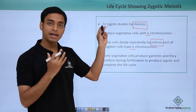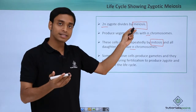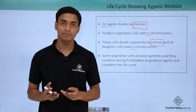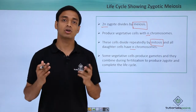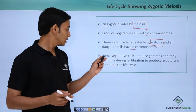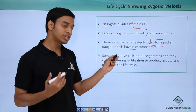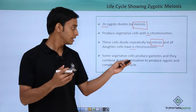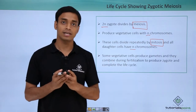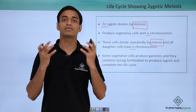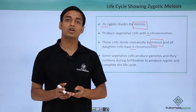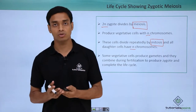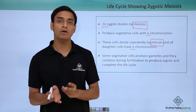The parent cell was 2N. It divided through meiosis and produced N number of chromosomes. Now these N chromosome-containing protists are dividing mitotically, which maintains the chromosome number, forming daughter cells with N number of chromosomes. Some of these vegetative cells produce gametes and they combine during the fertilization process in order to produce a zygote and complete the life cycle, forming diploid protists.